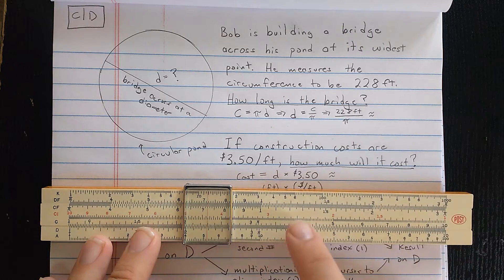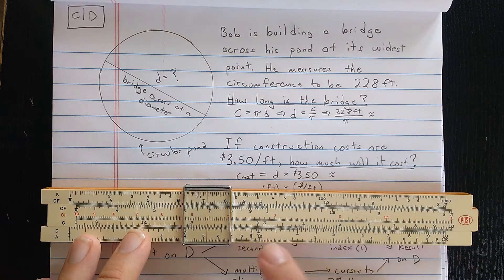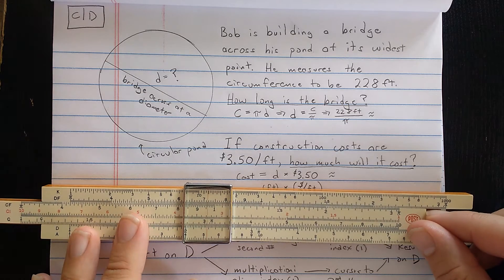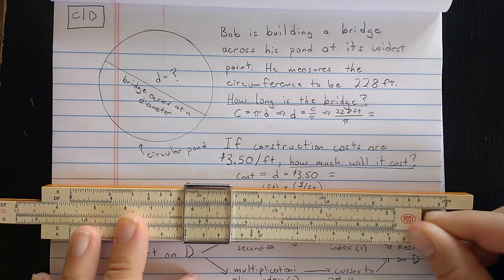Now, to divide, what I do is move the slide to the second number that I want to divide by on the C scale. That number is pi, and that number is marked on most slide rules.